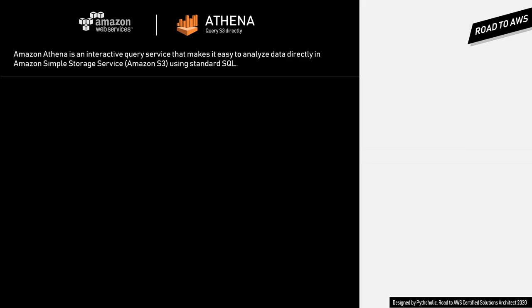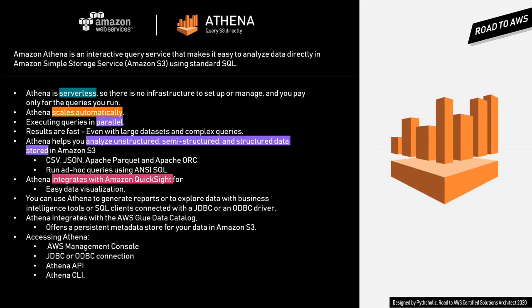AWS Athena is an interactive query service that makes it easy to analyze data directly in Amazon S3 using standard SQL queries. Amazon Athena is completely serverless, which means there is no need to manage infrastructure, and you pay only for the queries that you run. It's basically five dollars per TB — around 350 to 380 Indian rupees based on the current conversion rate.